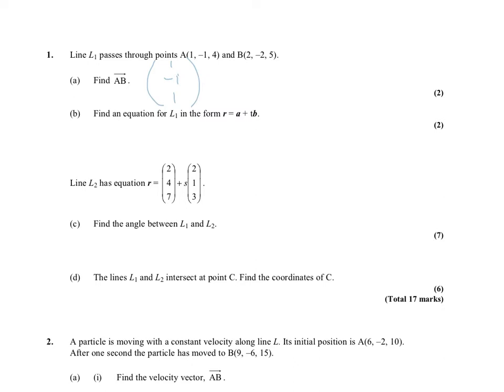So AB is 1, negative 1, 1. That vector represents the direction from point A to B. That's how you get from one point to the other. So when it asks you to find an equation for L1, that right there is your direction vector. Now, for your position vector, okay, so that's our B. I just wrote B because I was saying B.